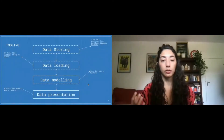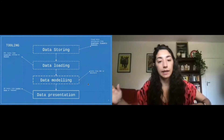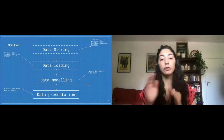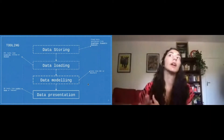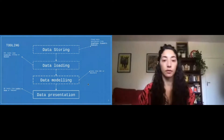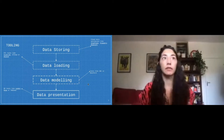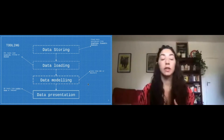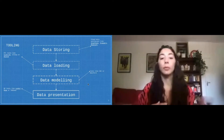Let's go deeper into the tools. Since the analytics engineer spans from data engineering to data analysis, there are several steps where they're involved. First, data storing — cloud data warehouses like Snowflake, BigQuery, or Redshift. Then data loading — ETL tools like Fivetran, Adlib, or Stitch. Then data modeling — tools like DBT or Dataform, which kind of started with the analytics engineer movement. Finally, data presentation — BI tools like Looker, Mode, or Tableau.